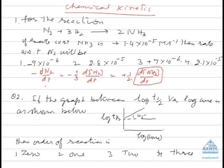So we can write the rate with respect to nitrogen will be equal to half of the rate of reaction with respect to ammonia. The minus sign is not to be taken into consideration. This only tells you that the concentration is decreasing.